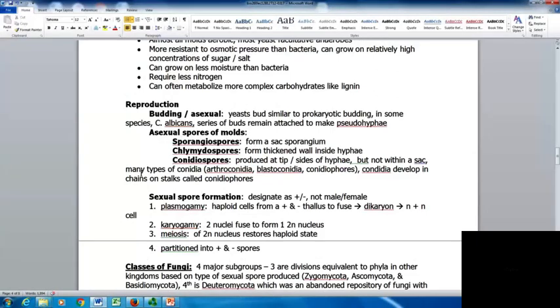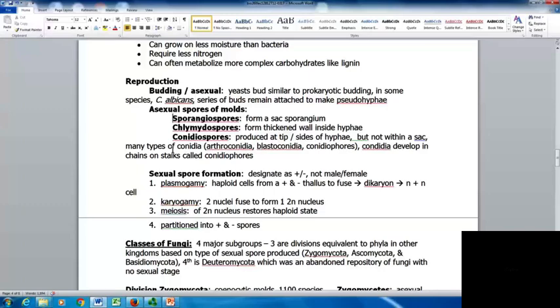For reproduction, budding is asexual. Yeasts bud similar to prokaryotic budding. In some species like Candida albicans, you can have series of buds that remain attached to make pseudohyphae. We can categorize asexual spores of molds based on shape. Sporangiospores form a sac-like sporangium. Chlamydospores form thickened walls inside the hyphae. Conidiospores are produced at the tip or sides of the hyphae but not within a sac. There are many types of conidia: arthroconidia, blastoconidia, and conidiophores. Conidia develop in chains on stalks called conidiophores.